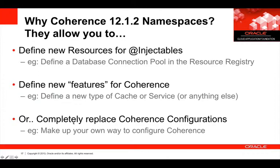One of the nice things you can do is also define new resources — your namespaces can define resources, put them as part of the resource registry (which we'll touch on in the next part of the series), and from there they can be injected into other beans and objects that Coherence uses. On top of this you can define new features — we'll cover this in part four of the series, for example defining a new cron service. Through this framework you can actually completely replace how Coherence is configured, since Coherence itself uses this framework to configure itself.